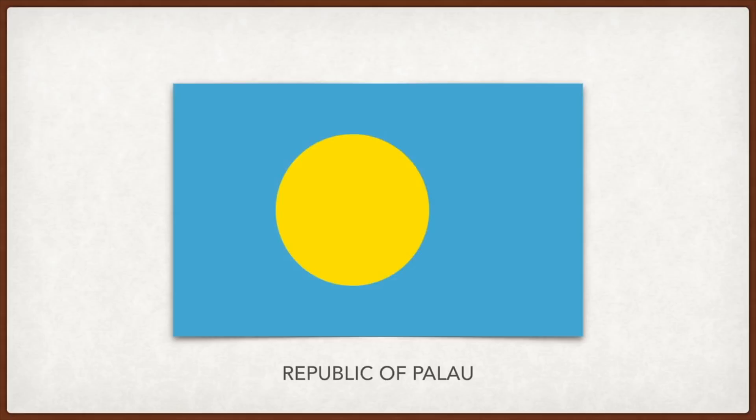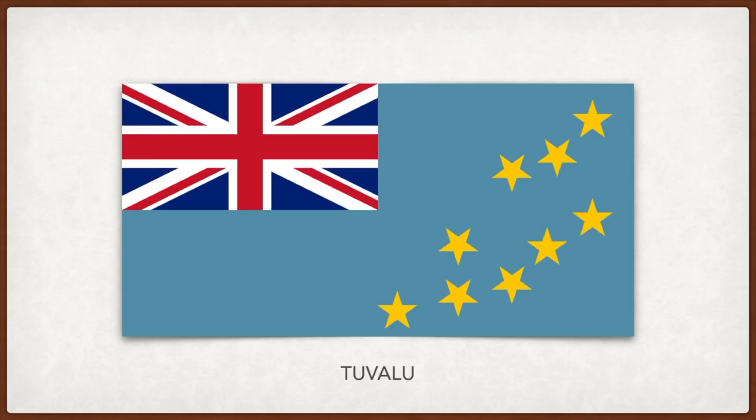Tuvalu: the stars represent the nine islands that make up the country in a geographically correct arrangement. The Union Jack in the top left represents its history as a British colony and current position as a Commonwealth country with the British monarch as their own. Nauru: the yellow line represents the equator; the star represents the country's geographical location one degree below the equator; its position near the hoist indicates the country's position to the west of the international date line; and the blue background is the Pacific Ocean.